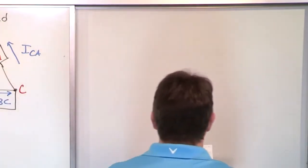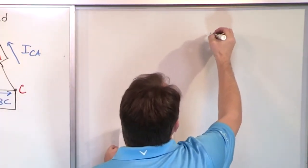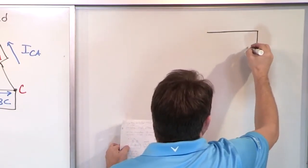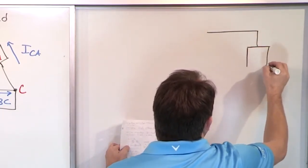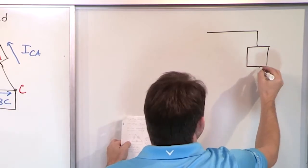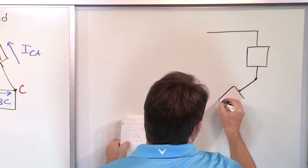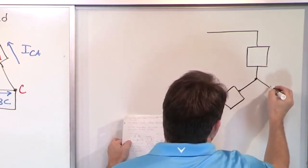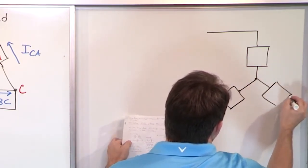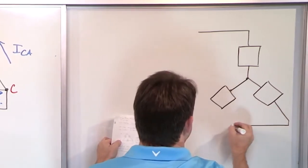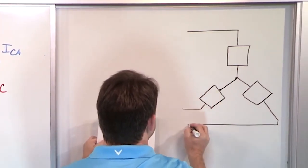So what we want to do is we want to convert this into something that looks like this. I'll try to draw it freehand. We want something like this, and then we want to have a common point here, and we want to have a load here, and then we want to have a load right here. Like this, and then this will be right here.